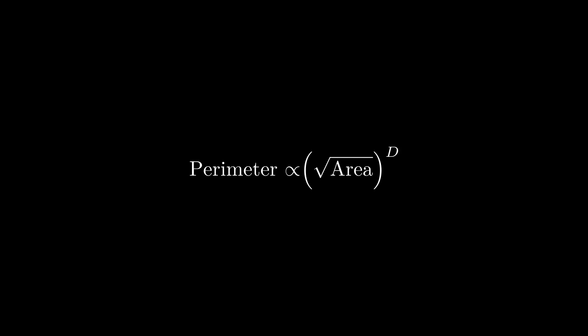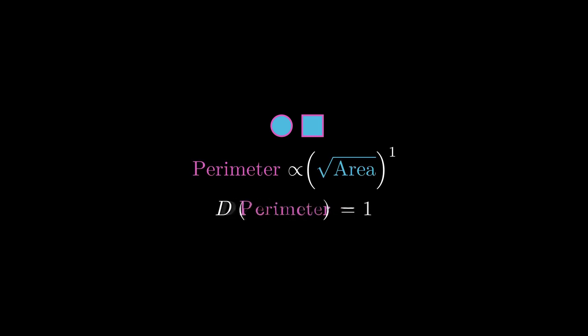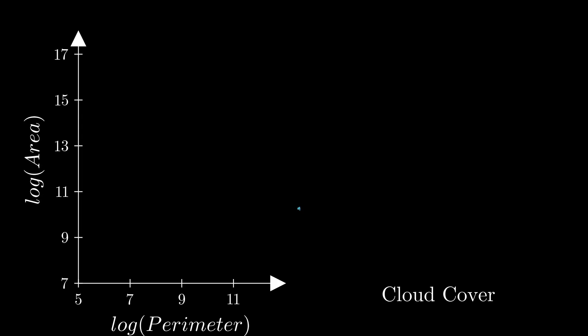He assumed perimeter to be proportional to the square root of area raised to the power d, where d represents the dimensionality of the perimeter. For squares and circles, since their perimeter is directly proportional to the square root of area, it has a dimension of 1. But these circular or square perimeters are well-behaved shapes, not embodying much complexity. In contrast, the perimeter of clouds seems pretty complex. So let's calculate the area and perimeter for these cloud projections and plot log area versus log perimeter. The slope of this curve would direct us towards the dimensionality of the cloud boundary.